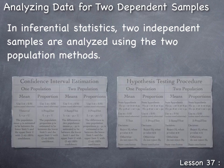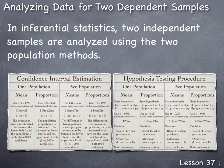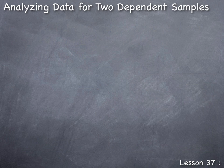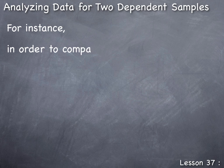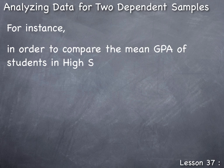In inferential statistics, two independent samples are analyzed using the two population methods. So whether we're doing confidence interval estimation or hypothesis testing procedures, our two population methods are used because two independent samples are collected from two separate populations.